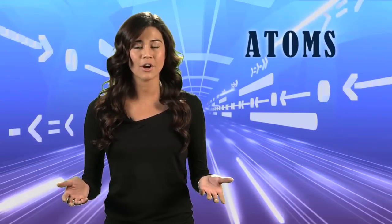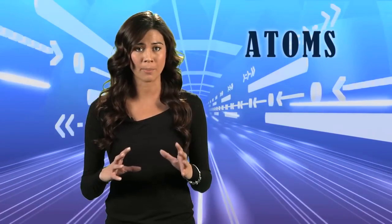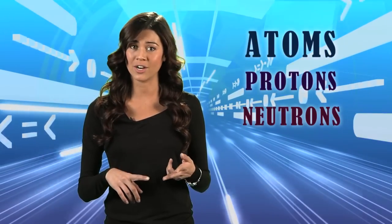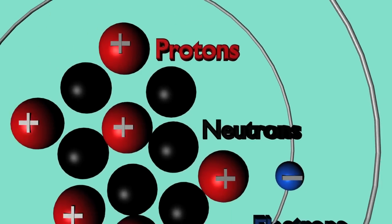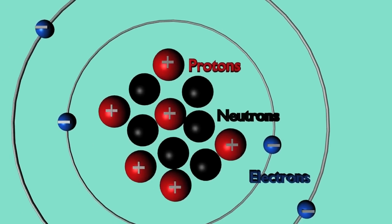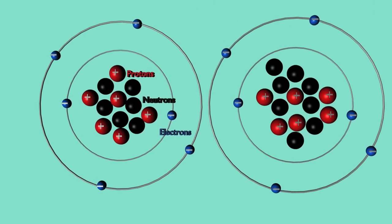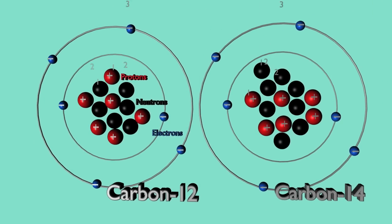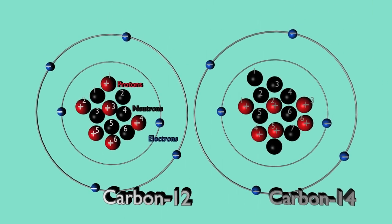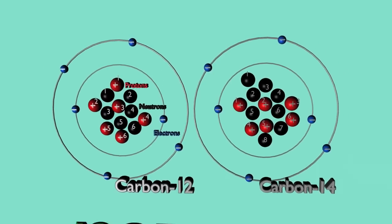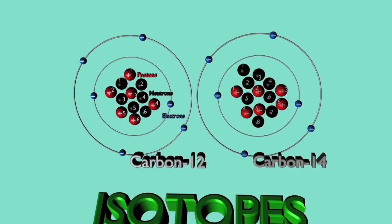Let's start with some basics. All matter is made up of particles called atoms, and atoms are made up of smaller particles: protons, neutrons, and electrons. Atoms of a given element all have the same number of protons, but the number of neutrons can vary. Atoms of the same element with a different number of neutrons are known as isotopes of that element.